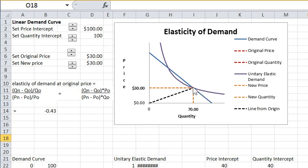And what's happening at this point is the original demand curve is steeper than the unitary elastic one. So the original demand curve is less elastic than the unitary one, so it must be inelastic here.